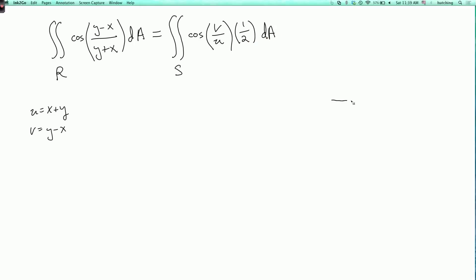And the region S, remember, looks like this. So this is u equals 1, u equals 2, u equals v, u equals minus v.